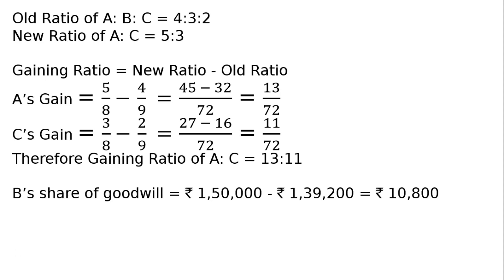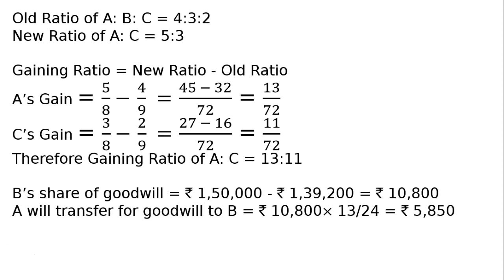How much will A pay? How much will C pay? A will pay 10,800 in the ratio 13 by 24. A will transfer for goodwill to B Rs. 10,800 × 13/24, that is Rs. 5,850.